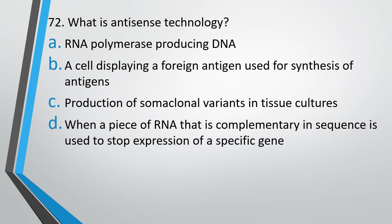Question number 72. What is antisense technology? RNA polymerase producing DNA, a cell displaying a foreign antigen used for synthesis of antigens, production of somaclonal variants in tissue culture, or when a piece of RNA complementary to a sequence is used to stop expression of a specific gene. The correct answer is option B — it is the technology where a piece of RNA is used to stop expression of a specific gene, and that RNA is complementary to the sequence.